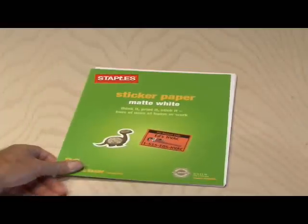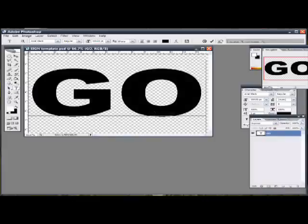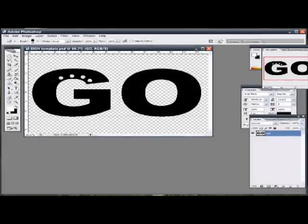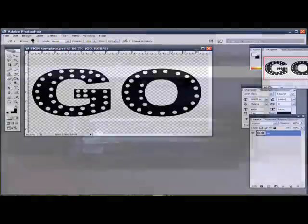The first step is to pick up some sticker paper that you can print through your inkjet or laser printer. Then I loaded Photoshop and designed the letters that I wanted to use in my sign. I also took small dots where I wanted the LEDs to go and placed those on the image. I thought the dots would give the letters more of a Broadway look.